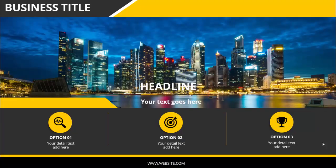In today's tutorial I'm going to show you how to make a professional brochure design in PowerPoint. As you can see here, you can just replace your business title here. I've added an image downloaded from the net — you can replace it with your own business image and change the headline. Below you have three options, or you can add one more. You can change the text according to your requirement and add website details or social media accounts. Let's see how to do this in PowerPoint.